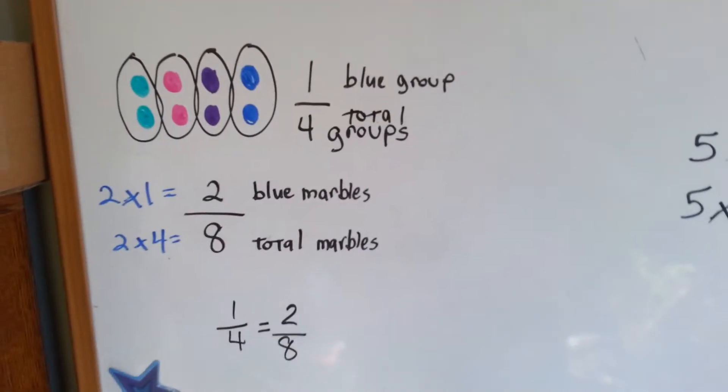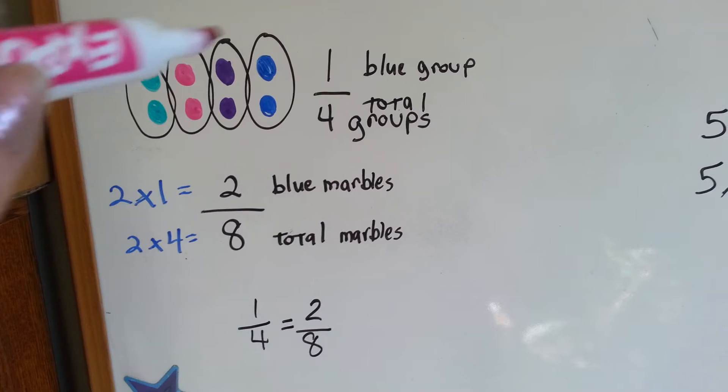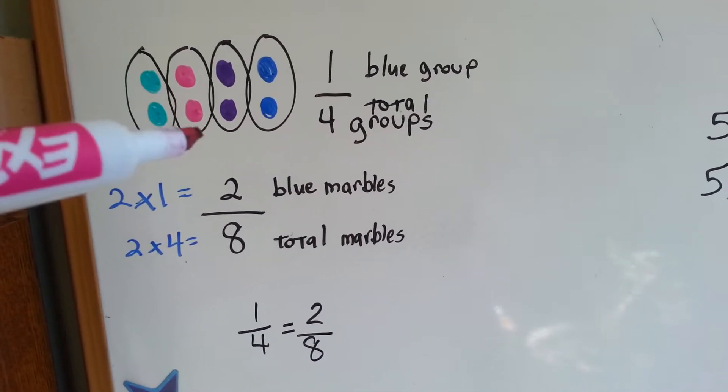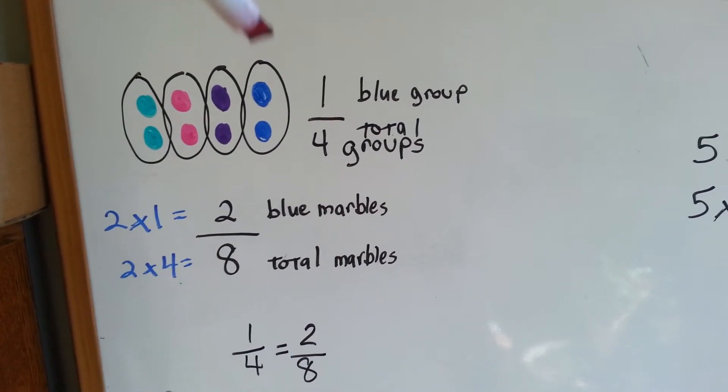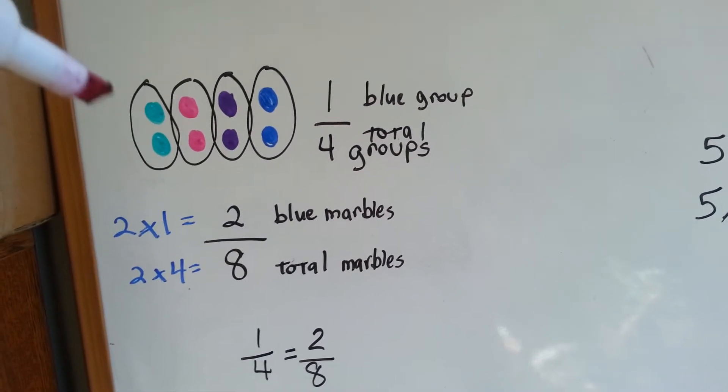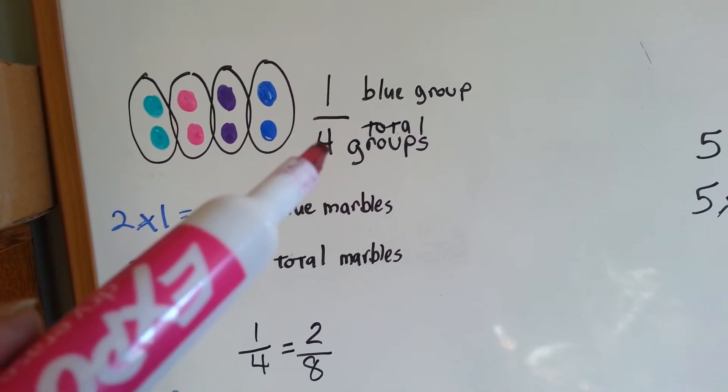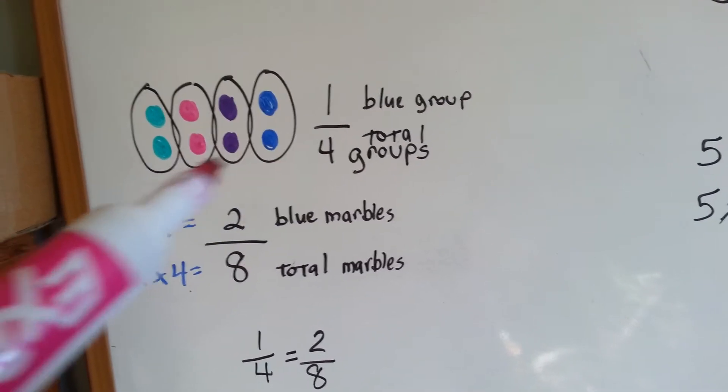Let's look at this. We've got four groups and they've got marbles in them. Green marbles, red, purple, and blue. There's one group that's blue out of four groups. One, two, three, four. One out of four is blue. So one-fourth of these groups are blue.